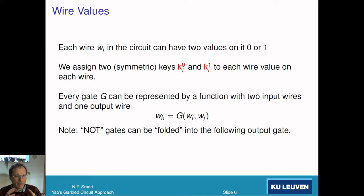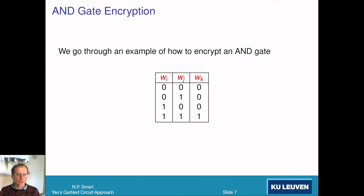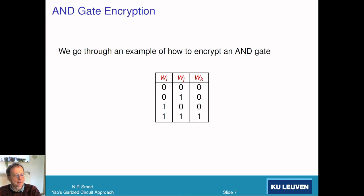Each gate is going to be a two-input gate with wi and wj as the input wires and wk as the output wire. NOT gates can be folded into the following output gates, so we won't worry about those here. Let's look at an AND gate. The AND gate: the wi wire can have zero or one and the wj wire can have zero or one, and the output is given by the standard truth table for an AND gate — computing the AND gate in the clear. What we're going to do is take this truth table and in some sense encrypt it — we're going to garble it.